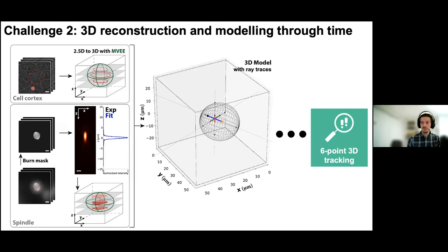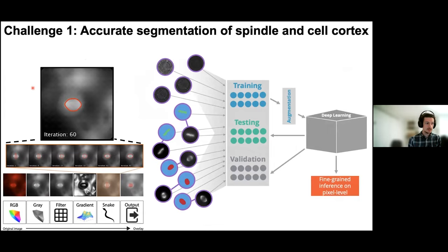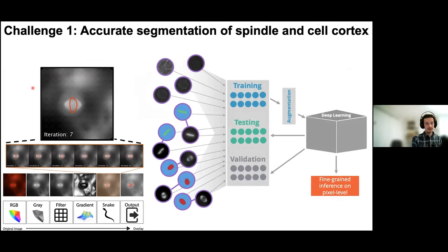Regarding preprocessing of microscopy images before feeding them to the network: the only steps done were timepoint normalization, because we have time-lapse movies, and Z-stack alignment. Otherwise, the raw images were fed directly into the model.